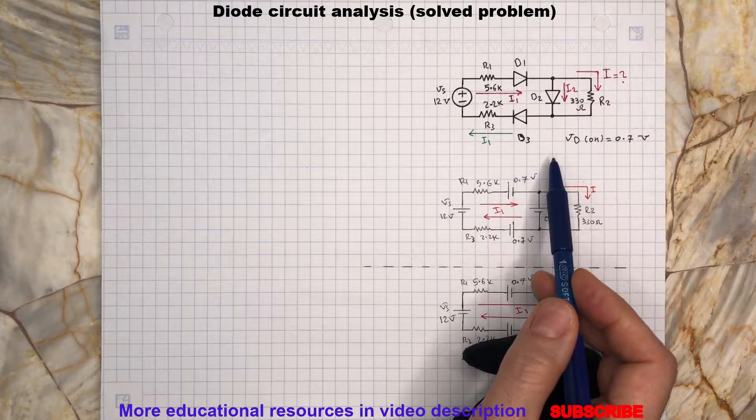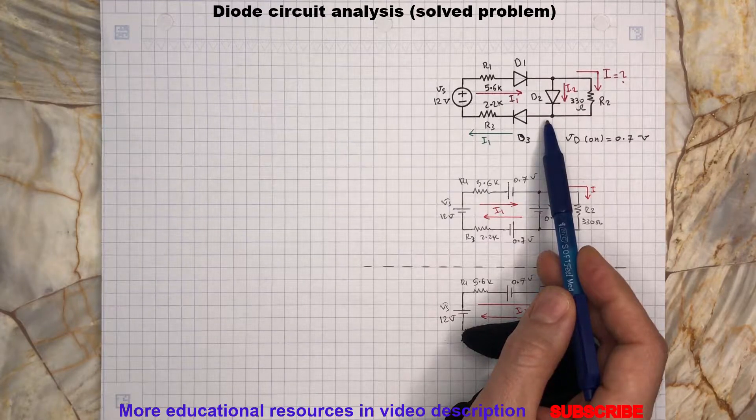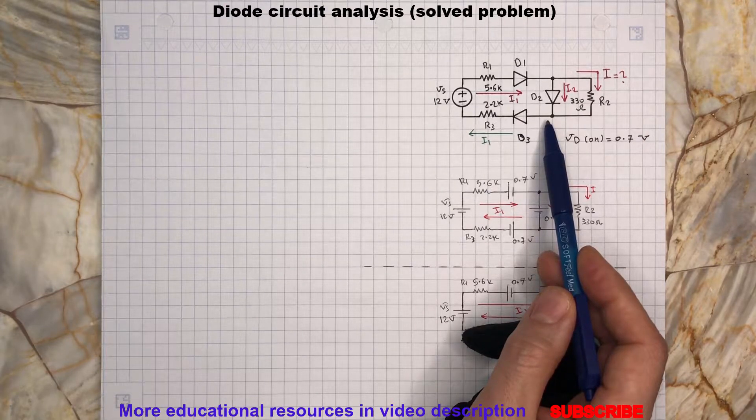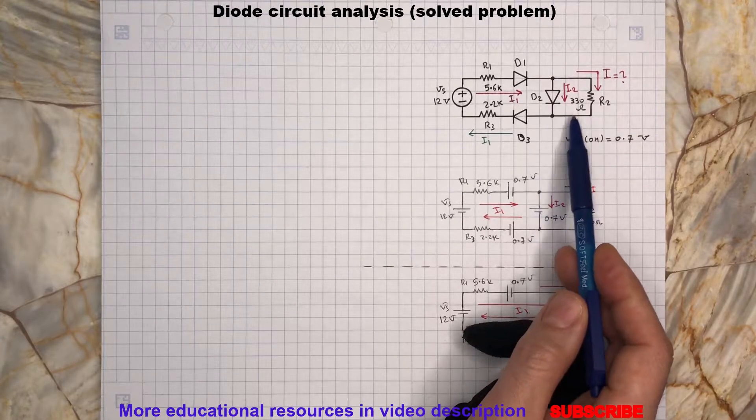Consider this diode circuit. Do you think all the diodes are on? For example, how can we be sure D2 is on so that we can determine the current flowing through the resistor R2?